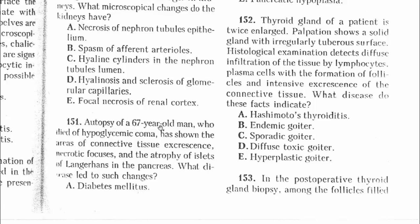Question 151: Autopsy of a 67-year-old man who died of hypoglycemic coma — meaning low glucose content in the blood — has shown areas of connective tissue excrescence, necrotic foci, and atrophy of the islets of Langerhans in the pancreas. Atrophy of the islets of Langerhans usually denotes diabetes mellitus.